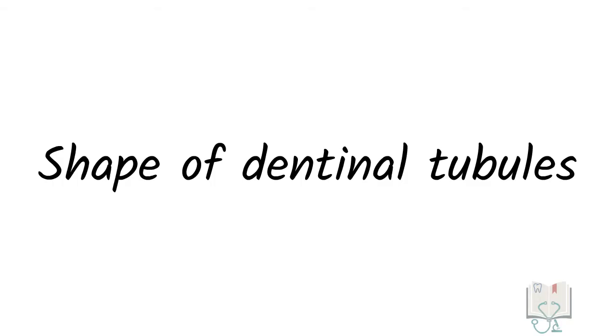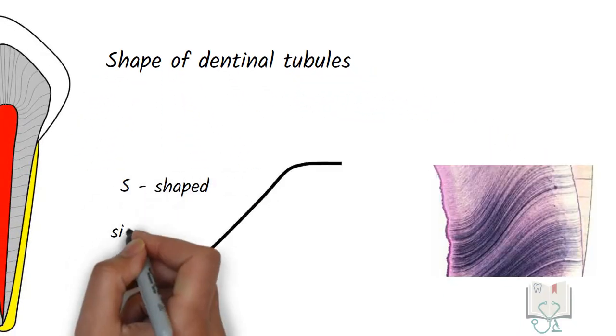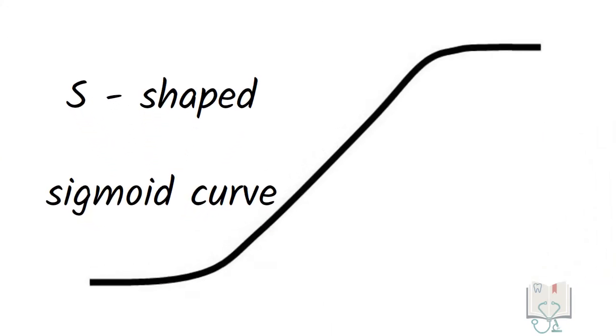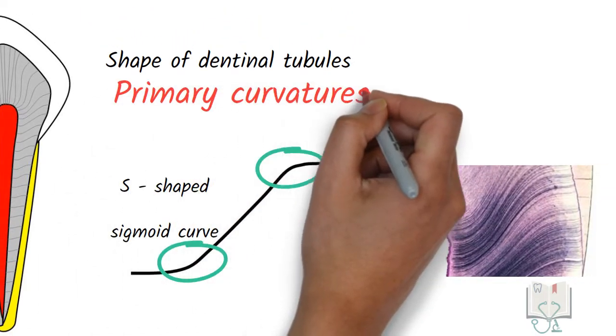Shape of dentineal tubules. Dentineal tubules are not straight but have a gentle S shape or a sigmoid curve in their course. That is there are two curvatures in opposite directions. These two curvatures are called as primary curvatures.